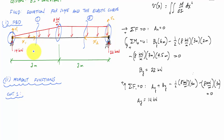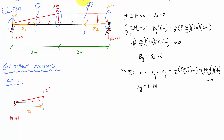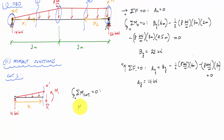Now it's all about cutting and drawing free body diagrams. For cut one, I draw the internal loading — shear V1 and internal moment M1. I apply moment equilibrium about the cut, setting the sum of moments about the cut equal to zero to get the moment function.